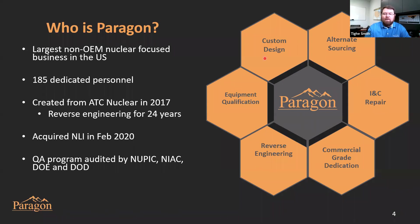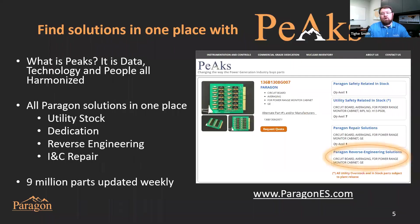Today we're going to talk about custom design and reverse engineering, but we have a number of other ways we provide solutions to our customers — you can find more information on our website or through our PEAKS program. PEAKS is an application on our website, an online catalog at the Parks Portal, that lets you see all the various solutions Paragon has to offer for nuclear power plant parts.